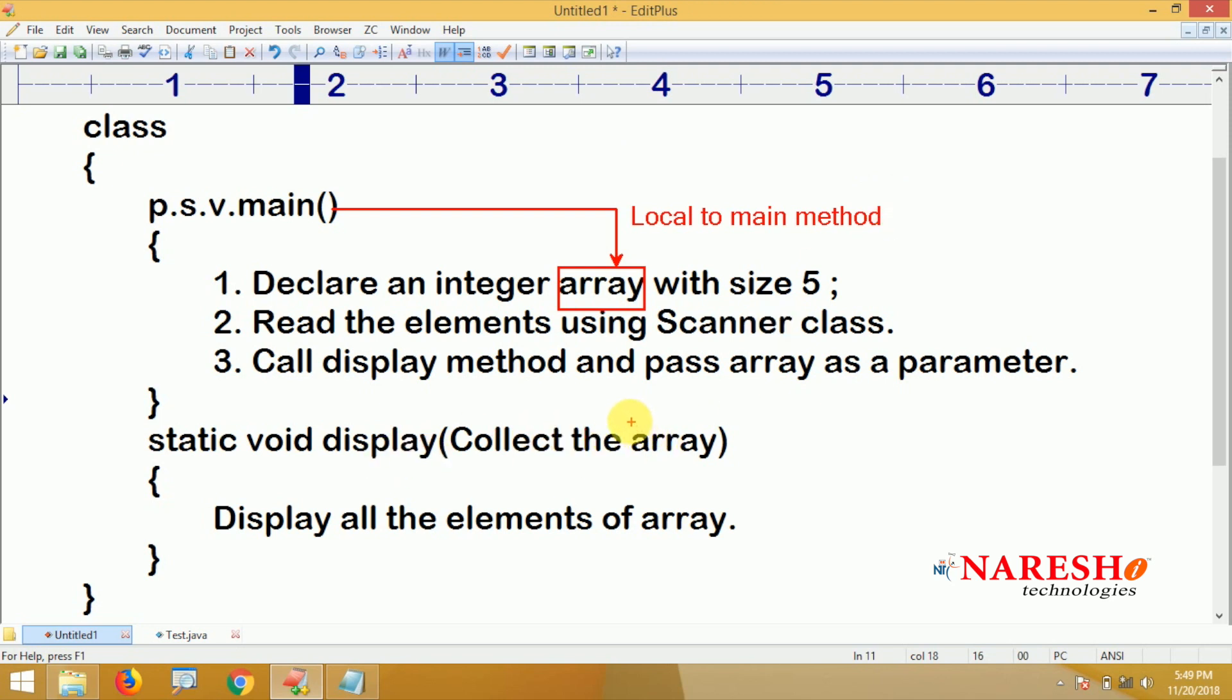And here, whenever we are collecting into one array, we know that arguments of a method work like a local variable of the display method. So whenever we pass this value as a parameter, that will come and store into this variable. With the help of this variable, just display all the elements.